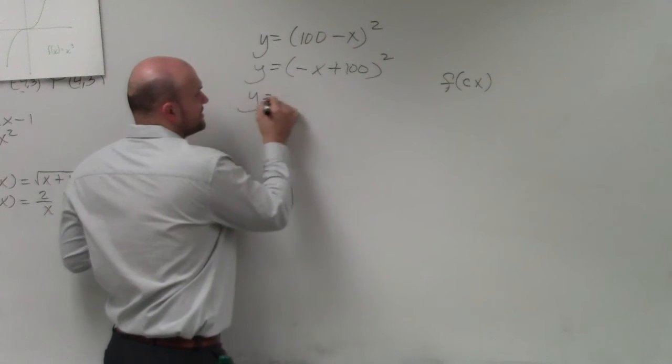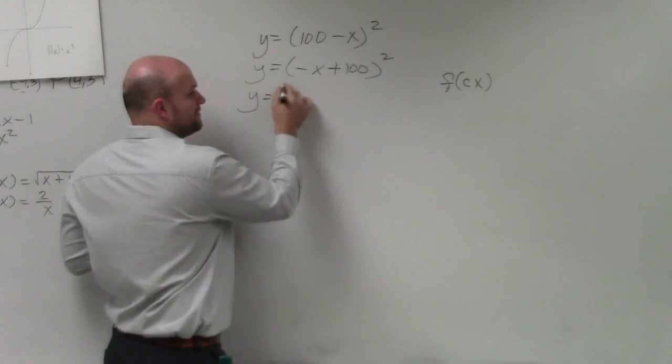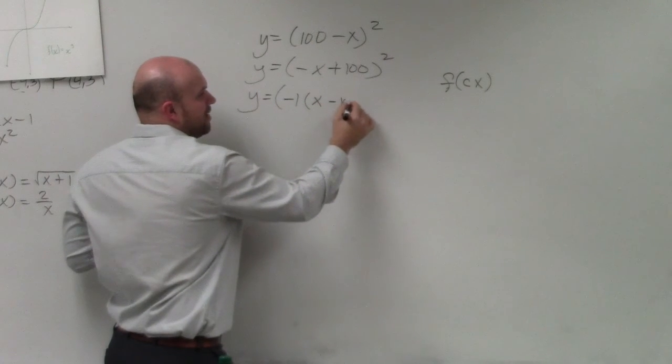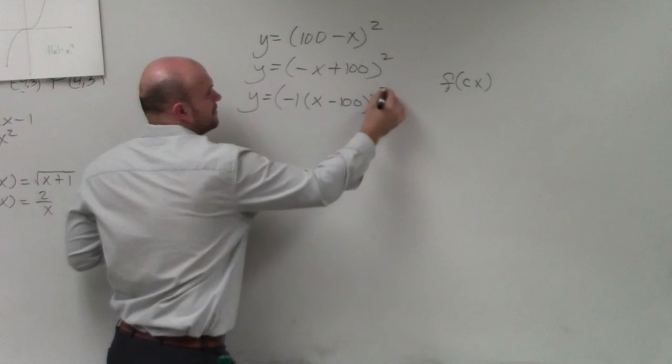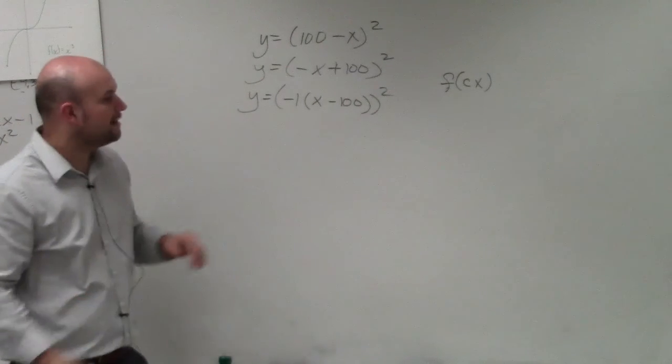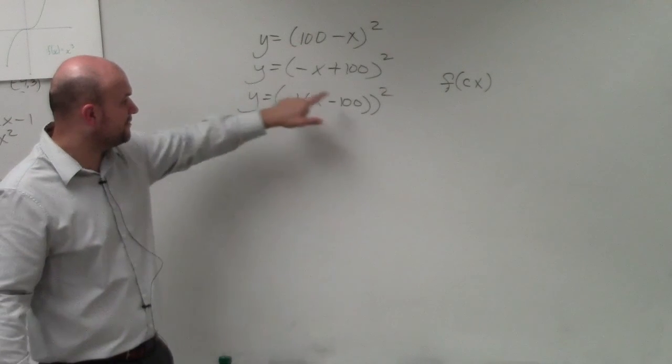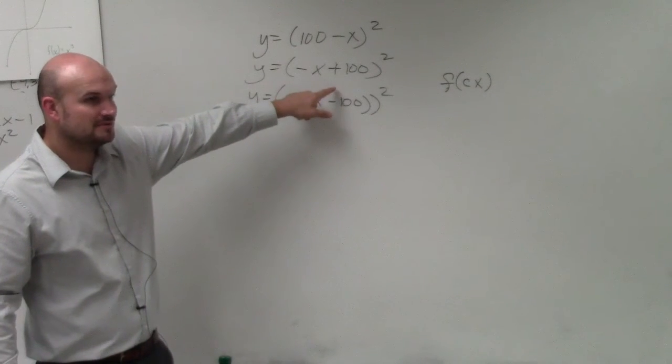So therefore, what I can do to show that it's being multiplied by everything, I can factor out the negative 1. By factoring out a negative 1, I now obtain, because is negative 1 times x and negative 1 times negative 100 the same thing right there? Yes.